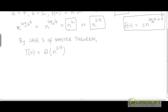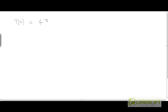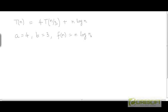Now consider a second recurrence: T(n) = 4T(n/3) + n log n. In this case, a = 4, b = 3, and f = n log n. Computing n^(log_b a), we get n^(log_3 4).